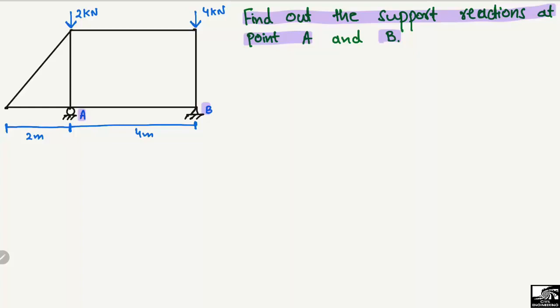The only concentrated loads acting here are 2 kN and 4 kN, and both are acting directly on top of the supports. The dimensions for the truss structure are given: 2 meters here, and 4 meters is the distance between the supports.